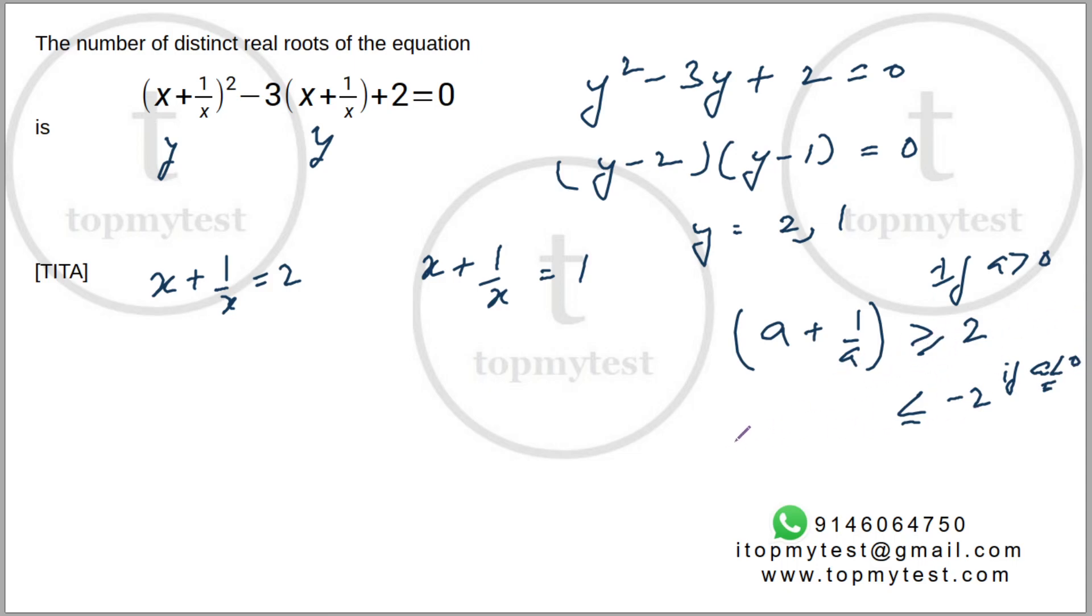So it cannot lie between 2 and -2. It cannot lie in this region at all, so 1 cannot be a valid scenario. You can verify this: if you convert x + 1/x = 1 into a quadratic equation, you get x² - x + 1 = 0. The discriminant is negative, so no real solution here.